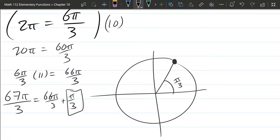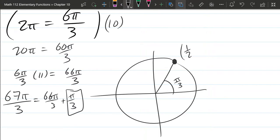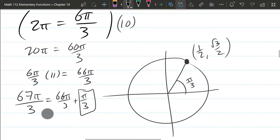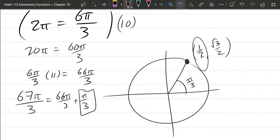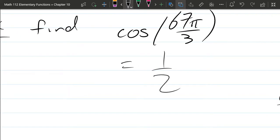So you need to have your unit circle memorized so you know the x, y coordinates right here are 1 half, square root 3 over 2. And we were asked about cosine. So in this case, we're going just with that 1 half right there. So cosine is equal to just 1 half.